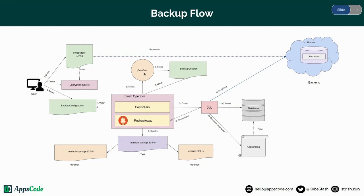The cron job periodically creates a backup session to trigger a backup. The Stash operator watches for backup sessions and when it finds one, it resolves the corresponding add-on — in this case the MariaDB backup add-on — and creates a backup job. This backup job gets the connection information for the database from the app binding, dumps the database, sends it to the backend, and finally sends the metrics to the Stash operator.